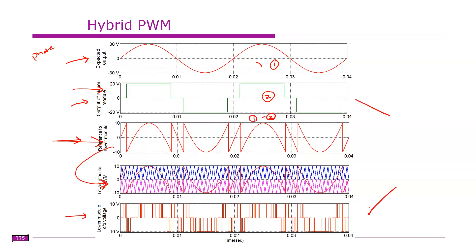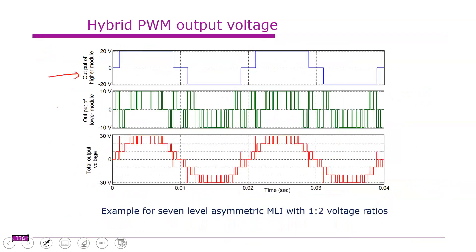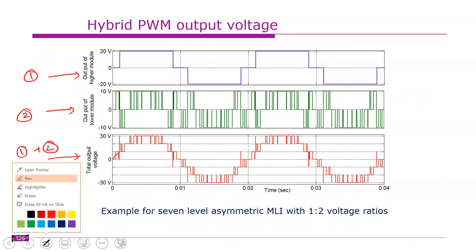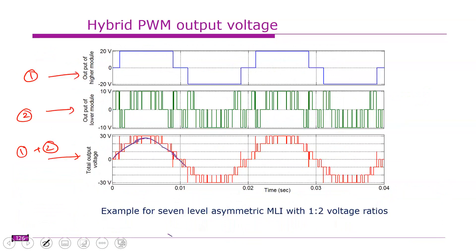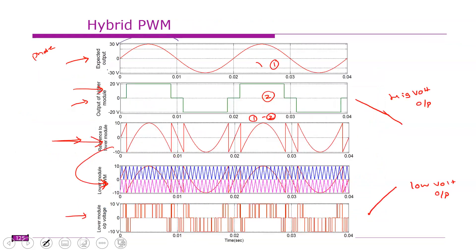This first bridge is operating in level shifted mode — it may also be operated in phase shifted mode. Based on this, you get an output of this nature. Now combining the two: the first bridge or high voltage bridge output, and the low voltage bridge output. If you combine these two — the first one plus the second one — you get the overall inverter output, which has a fundamental corresponding to the original expected waveform.